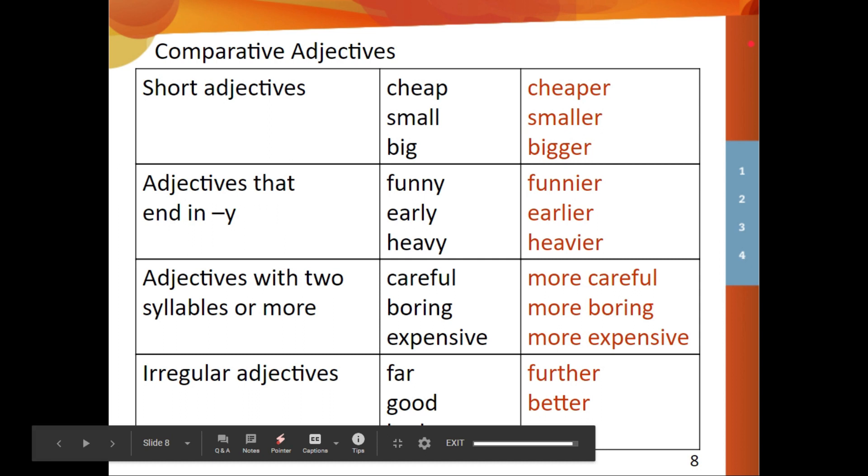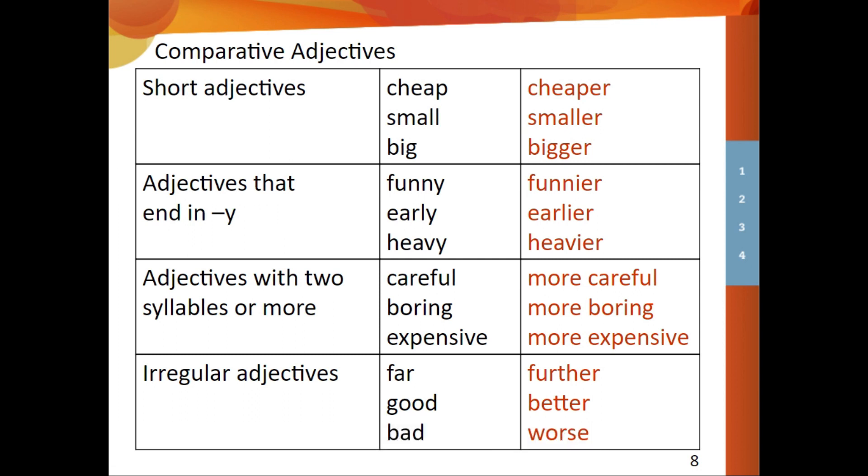Let's see now comparative adjectives. We're going to make comparisons in this way. There are other ways to make comparisons. But right now we're going to focus on using comparative adjectives. So for short adjectives like cheap and small and big, this is what we do with the comparison. We do cheaper, smaller and bigger. Remember that adjectives that end in Y like funny, early and heavy, we have to make some changes. We have to turn the Y into an I. And then we have funny, funnier, early, earlier, heavy, heavier. So the spelling changes. We change the Y for the I.